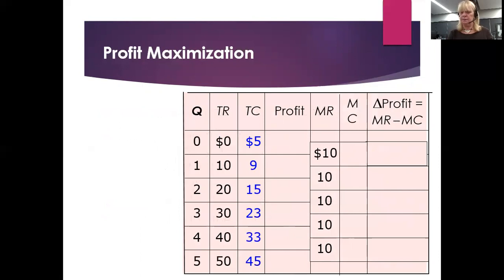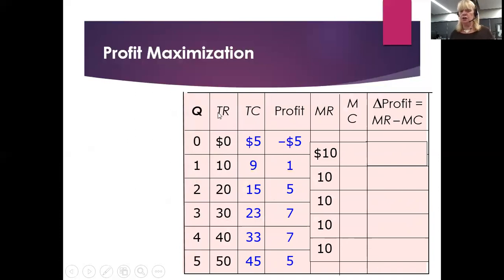Here are our total costs. To calculate profit, we take total revenue minus total costs. At zero output: zero minus five is negative five — we're losing money. At one: 10 minus 9, we made a dollar profit. At two: 20 minus 15, and so on. At output three and four we make $7 profit each. But when we produce five units, we actually make less than we made at four — that's interesting.